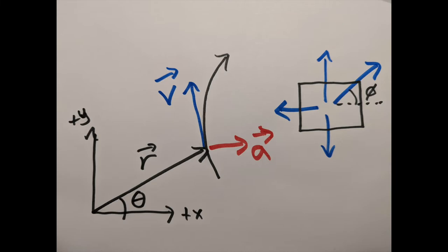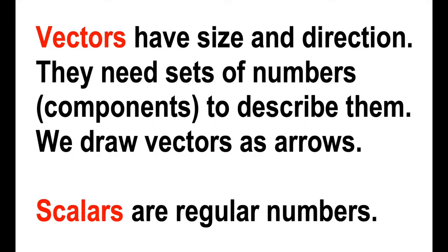We do this with vectors. Vectors have size and direction. They need sets of numbers, two numbers in two dimensions, components to describe them. We draw vectors as arrows, and vectors are contrasted with scalars, which are just regular numbers.